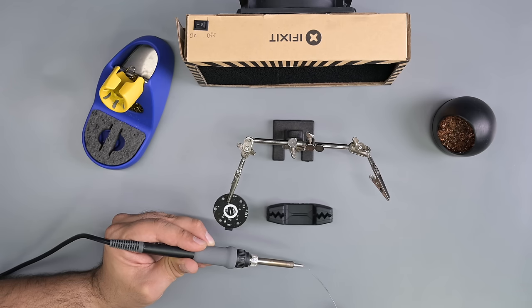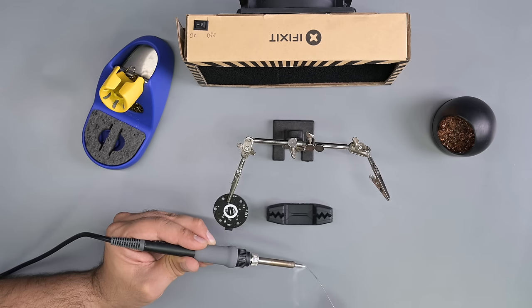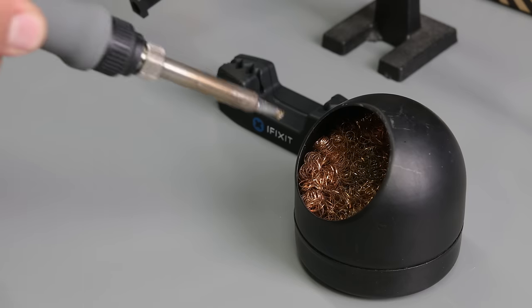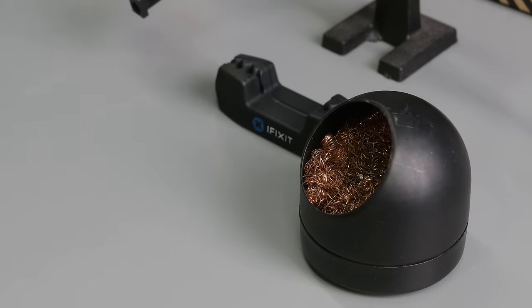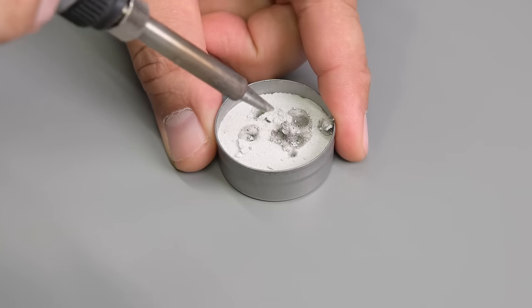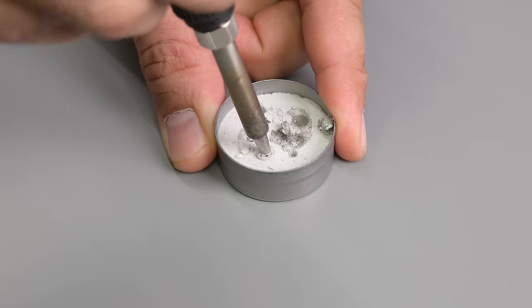Soldering iron tips have an iron plating that's great for outputting heat but they are prone to oxidation and corrosion. Solder is resistant to both oxidation and corrosion so coating the tip with a bit of solder or tip cleaner is a great way of protecting that vulnerable iron plated layer.